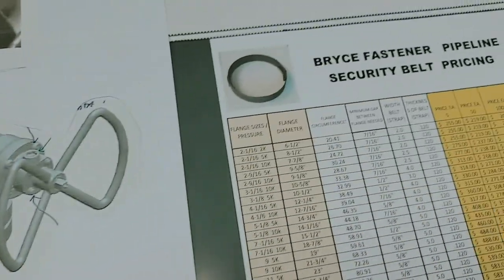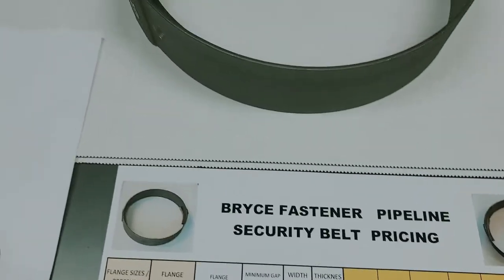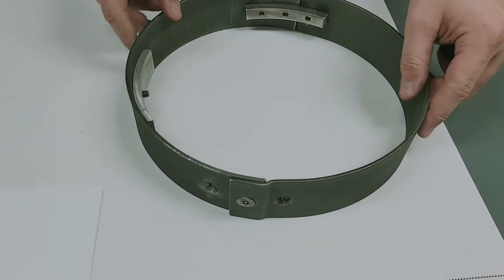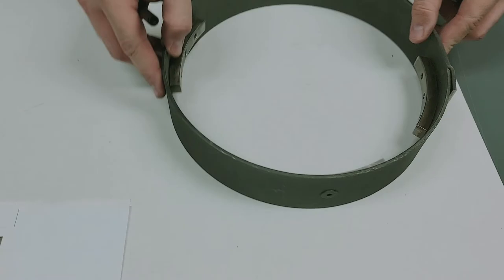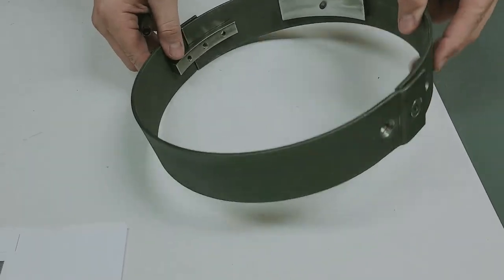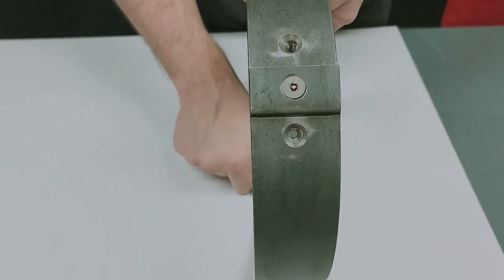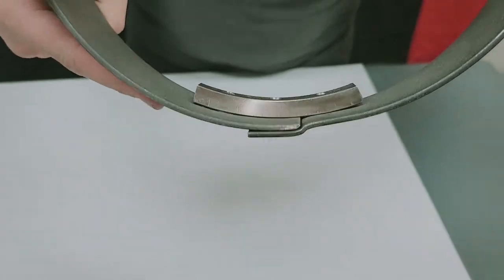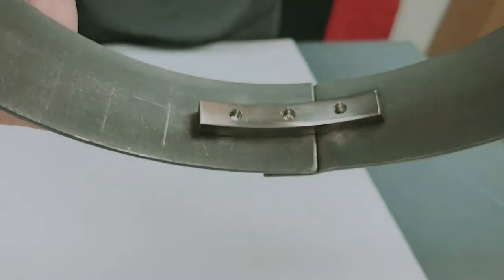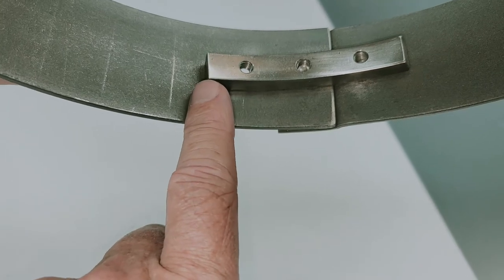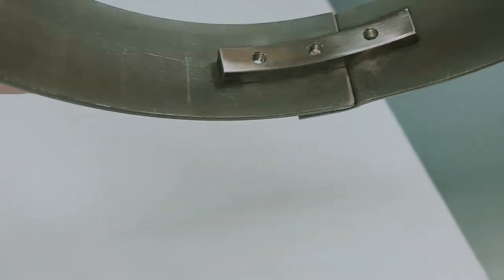This is what we call the Bryce Security Pipeline Belt. It's a belt that goes all the way around the outside of those flanges. It's a two-piece part. It uses our Bryce Security fasteners that are so far almost impossible to get out if you don't have the key. And you simply install that. It does have a little flange right here that keeps the part in the gap.